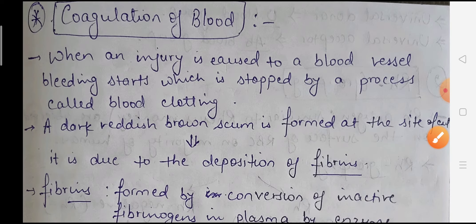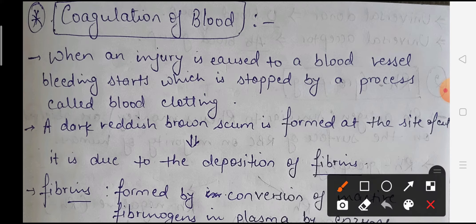Now we will discuss coagulation of blood. When an injury is caused to a blood vessel, bleeding starts, which is stopped by a process called blood clotting. Whenever we get a cut and blood starts leaking, it does not keep flowing forever - after some time it stops. The process by which blood leakage is stopped is called blood clotting.